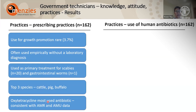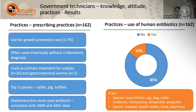On the use of human antibiotics in animals: 15% of technicians reported ever using human antibiotics, possibly due to lack of supply of vet medicines. Human antibiotics were used in chickens, pigs, dogs, and cattle, with active ingredients including tetracycline, amoxicillin, and ampicillin. The sources were often leftovers from hospitals or healthcare centers, or purchased from kiosks or human pharmacies.